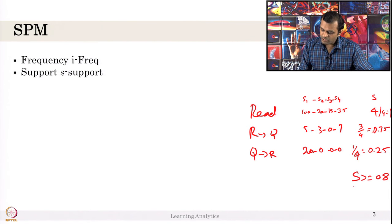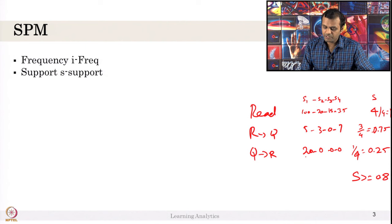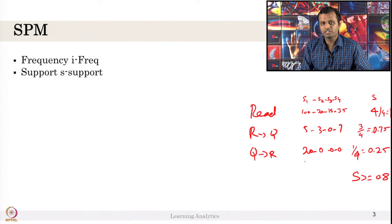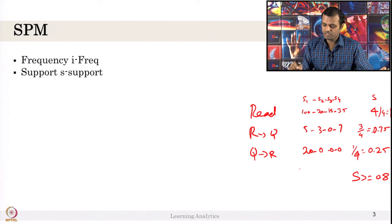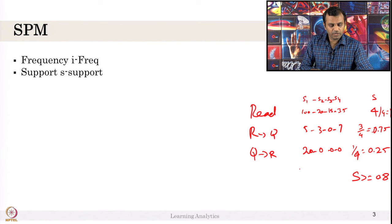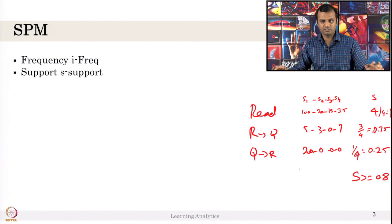That is what S support tells you. What i-frequency tells you is whether this pattern is evenly distributed across all students, and whether you should consider this particular pattern for analysis or inferences. A combination of high i-frequency and S value will tell you which patterns to pick.